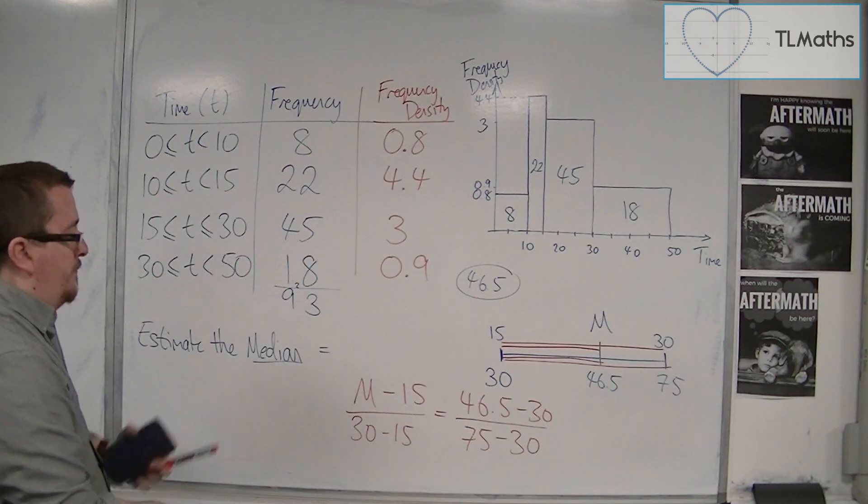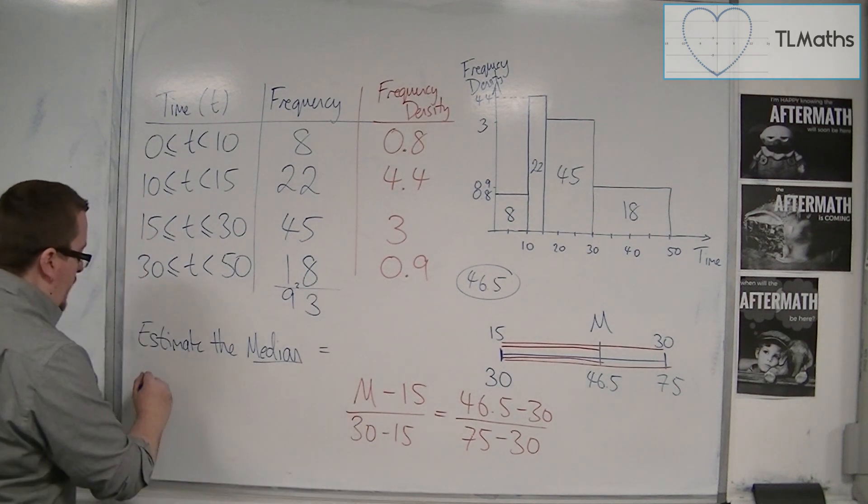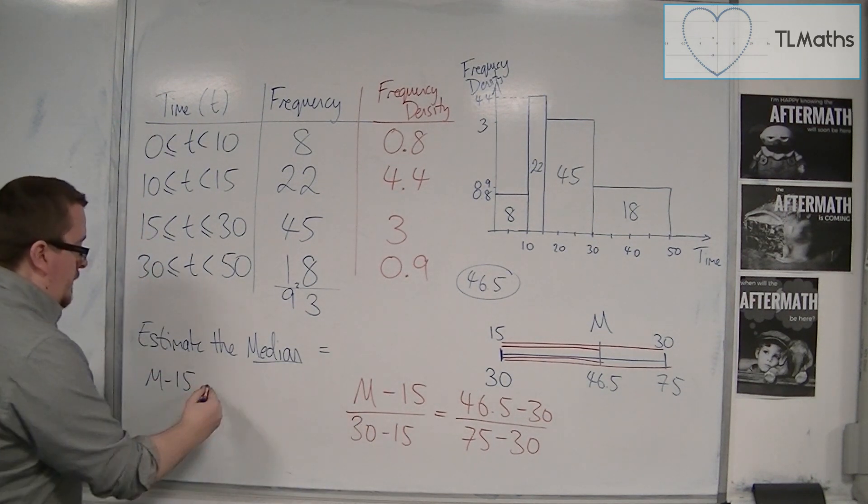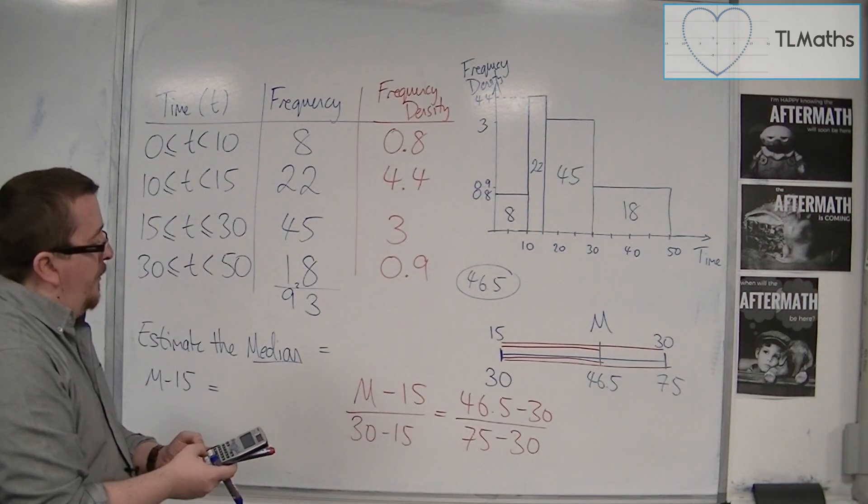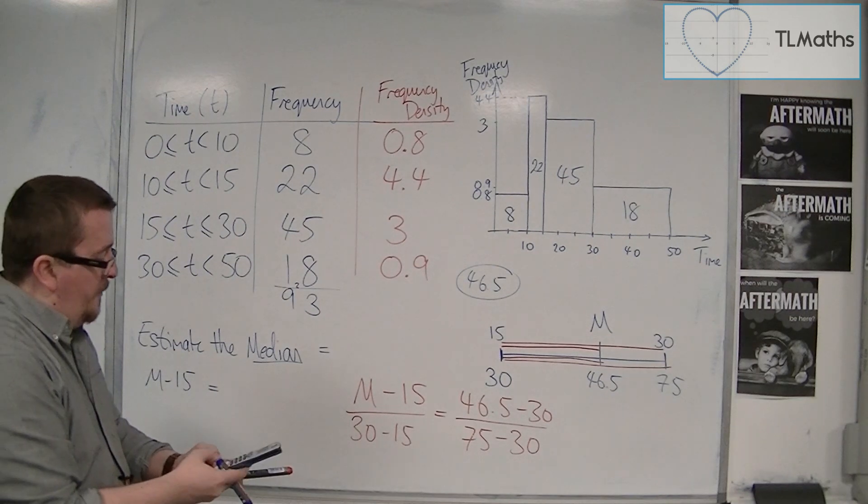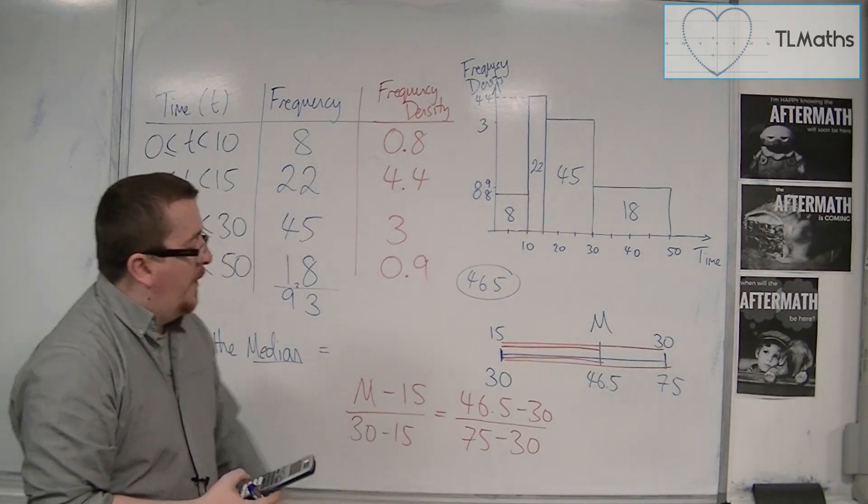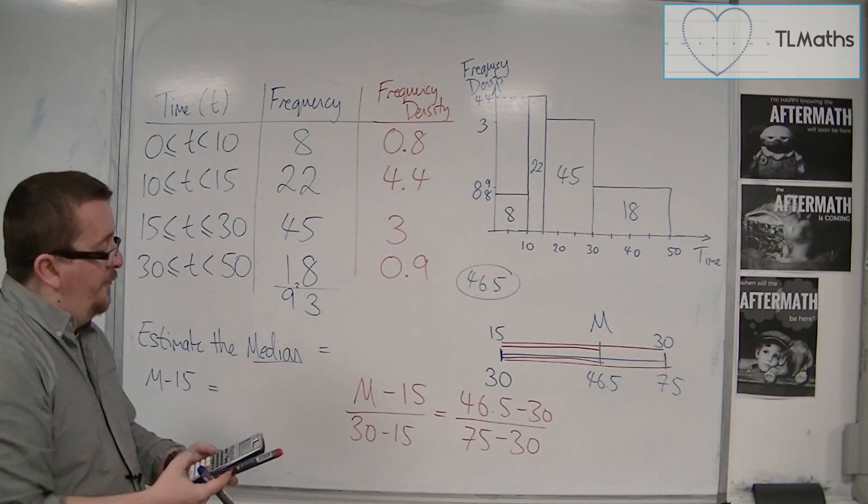So if we simplify this up, we've got the M take away 15. We know that we can work out what this is. So 46.5 take away 30. So 16.5. We're going to divide that by 75 take away 30. So 45.